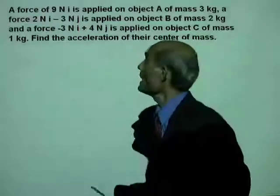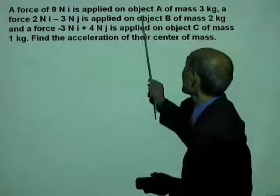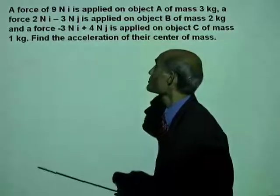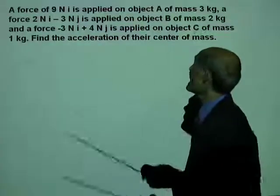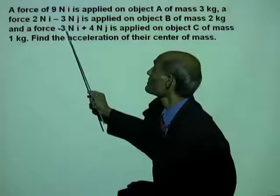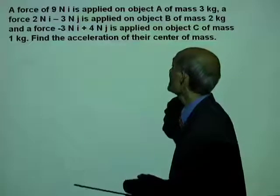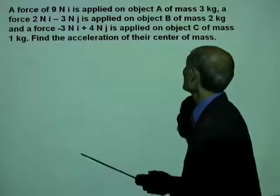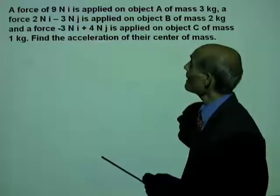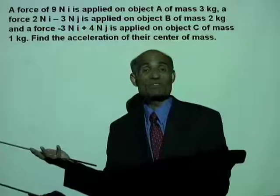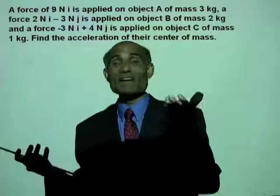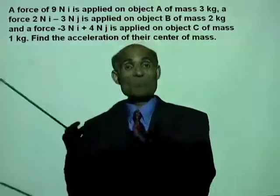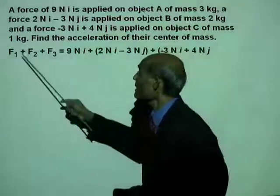Let's do a small problem. A force of 9N·i is applied on object A of mass 3 kg. A force of 2N·i minus 3N·j is applied on object B of mass 2 kg. And a force of negative 3N·i plus 4N·j is applied on object C of mass 1 kg. Find the acceleration of their center of mass. The equation for the acceleration of the center of mass is F_net divided by the sum of all the masses.